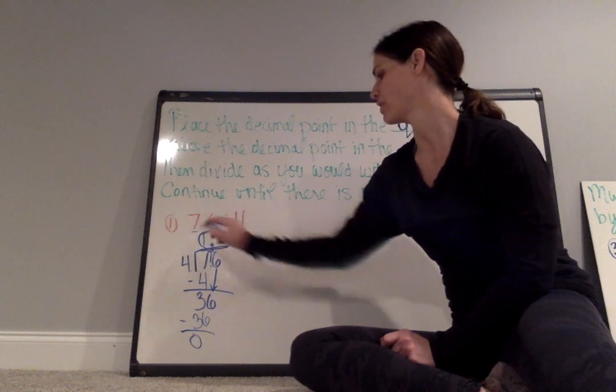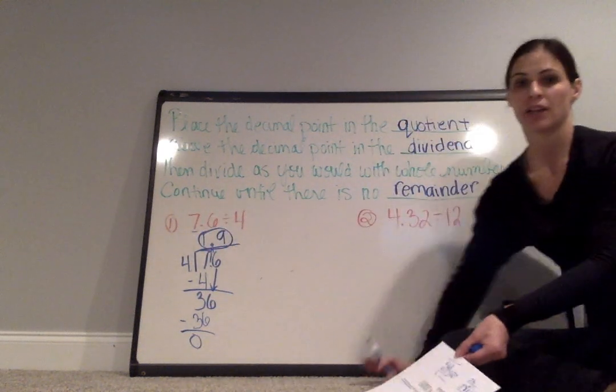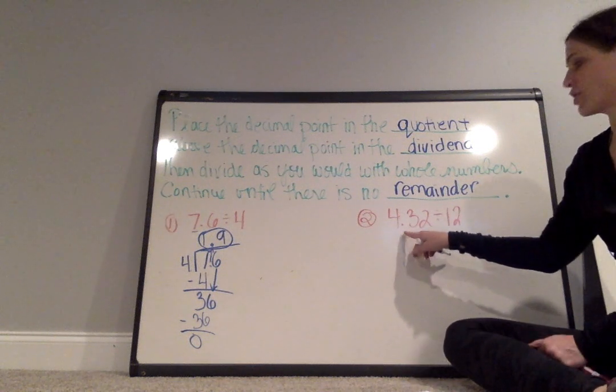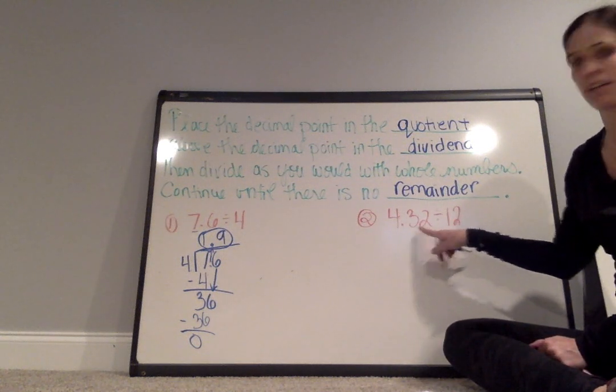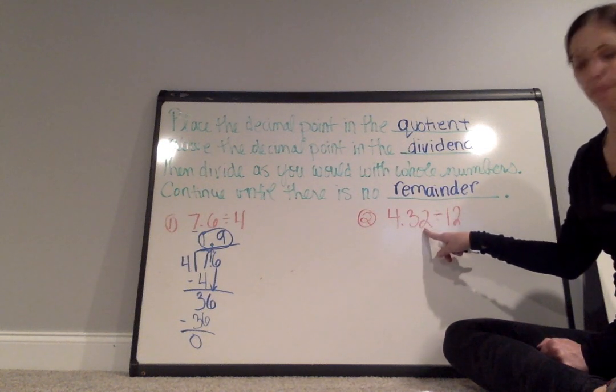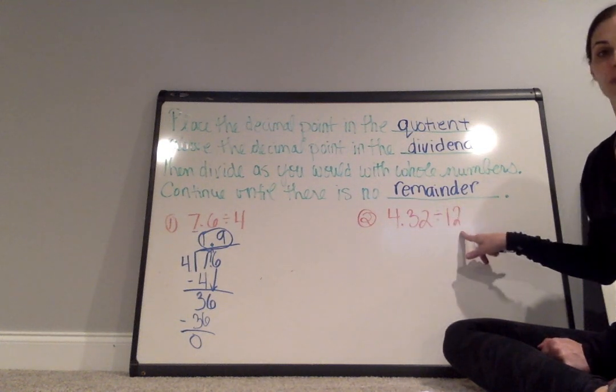So my quotient is 1.9. On the second problem on your paper, if you could actually change where you have 4.38, could you change that to 4.32 and then divide it by 12.